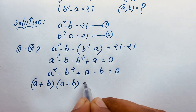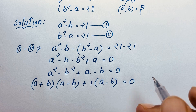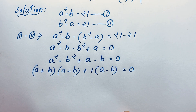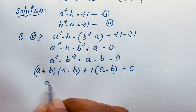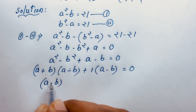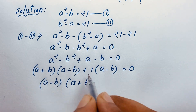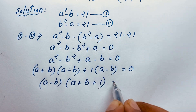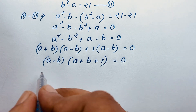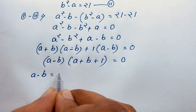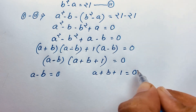If I take positive 1 as common from (a minus b), we get (a minus b) is common. So (a minus b) times (a plus b plus 1) equals zero. This gives us two cases: our first case is a minus b equals 0, and the other case is a plus b plus 1 equals 0.